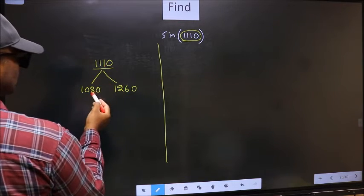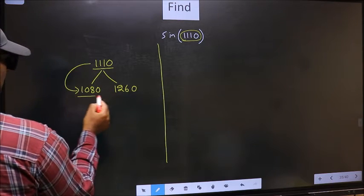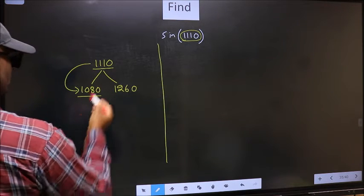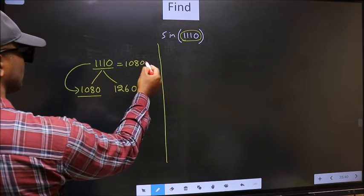Now 1110 is close to which number? This is close to 1080. So this now should be written as 1080 plus 30.